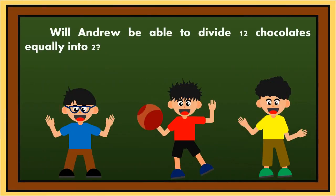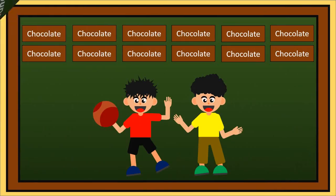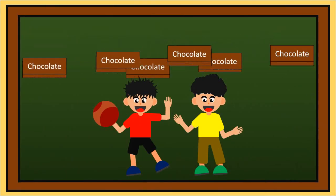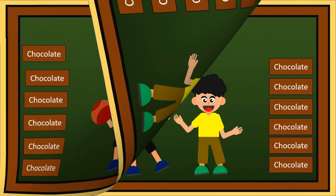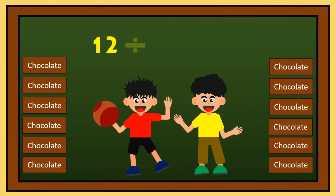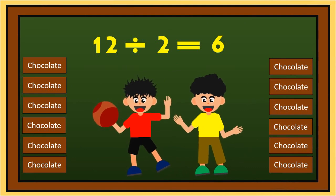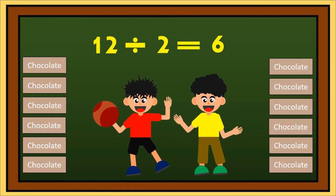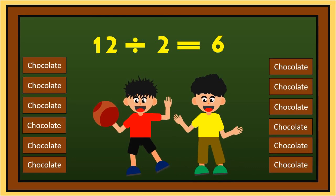Will Andrew be able to divide 12 chocolates into 2? 12 divided by 2 is 6. Ang bawat isa ay makakatanggap ng 6 chocolates.